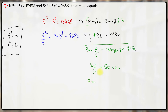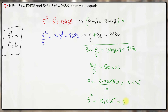From here, a comes out to be 5 into 50,000 divided by 16, which is 15,625. And a is 5 raised to the power x, so 5 raised to the power x is 15,625. Now 15,625 is basically 5 raised to the power 6 — this is 625 into 25, which is 5 raised to the power 4 times 5 raised to the power 2. So 5 raised to the power x is 5 raised to the power 6, hence x comes out to be 6.